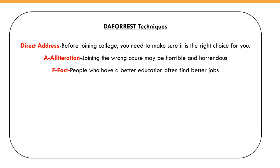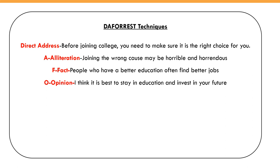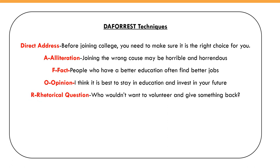The F stands for Fact. Example: 'People who have a better education often find better jobs.' This is stated as a fact — using 'often' makes it statistically plausible rather than an absolute claim. The O stands for Opinion. Example: 'I think it's better to stay in education and invest in your future.' Then we have two Rs. The first R is Rhetorical Question. Example: 'Who wouldn't want to volunteer and give something back?' — designed to make the reader think about the message, not expecting a literal answer.